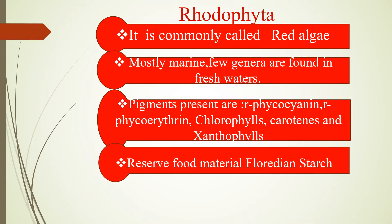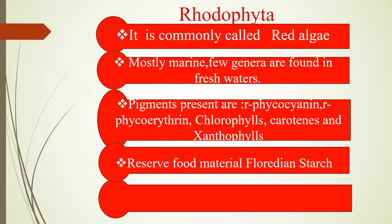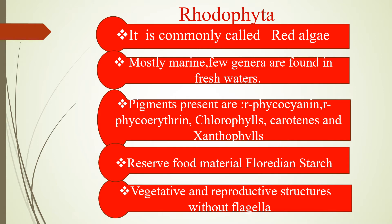The reserve food material is Floridian starch. You have studied Chlorophyta — the reserve food material there is starch, and when you treat it with iodine you get a blue coloration. But here you won't get a blue coloration; you will get a reddish wine color. That's why the name is Floridian starch. In this algae, vegetative and reproductive structures are without flagella — they are non-motile.